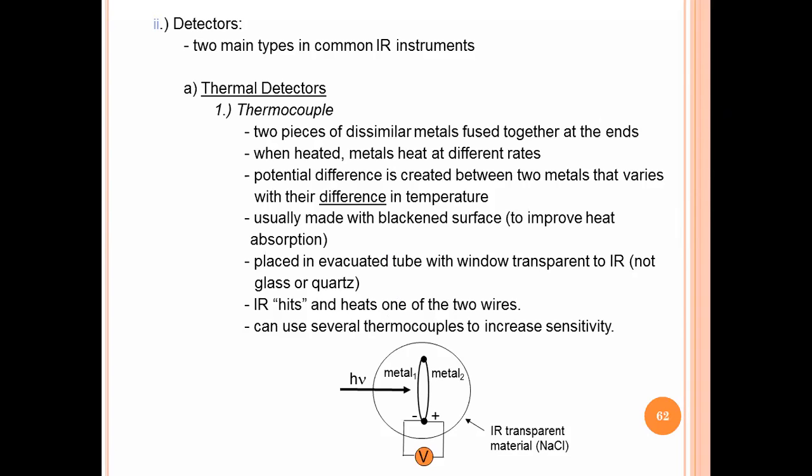The word thermocouple means two pieces of dissimilar metals. See the diagram: metal one and metal two. Two pieces of dissimilar metal - metal one is different than metal two - fused together at their ends. When heated, metals heat at different rates. Obviously, if we apply heat (h nu is the heat), the heating rate or heating difference creates potential difference between the two metals that varies with their difference in temperature.